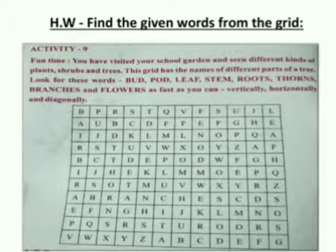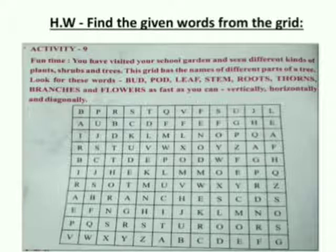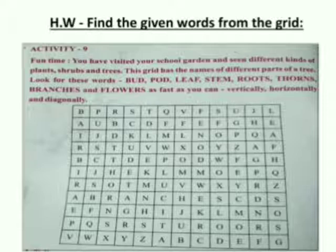Now it's homework time. This activity is given in your textbook. Try to find out the words given here, hidden in this grid. This homework activity will help you improve your concentration. Find out the words — bud, pod, leaf, stem, roots, thorns, branches, and flowers — as fast as you can from this grid.